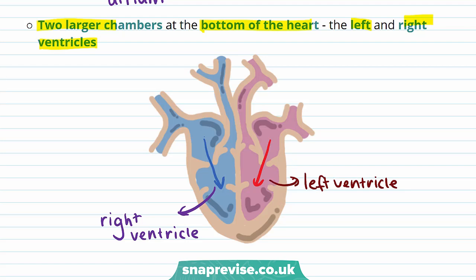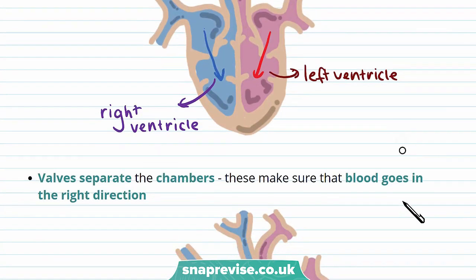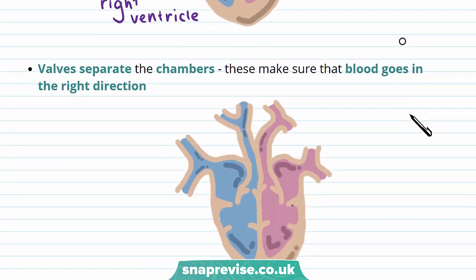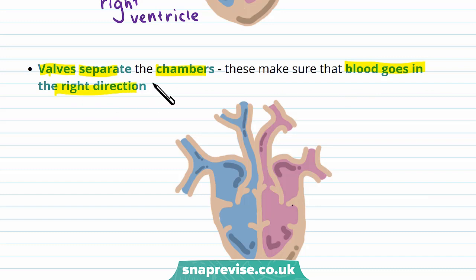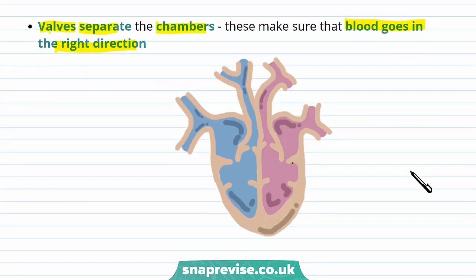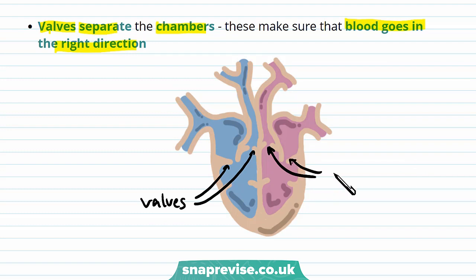What separates the atria and the ventricles? The heart has valves which separate the chambers and make sure that blood goes in the right direction. These valves are on both sides of the heart and make sure that blood doesn't flow backwards.